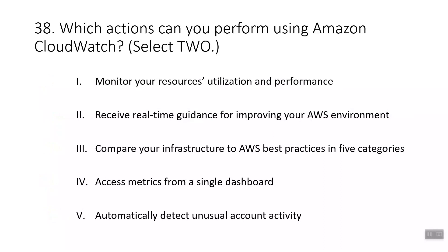Question thirty-eight: which actions can you perform using Amazon CloudWatch? The correct answers are monitoring your resources' utilization and performance, and accessing metrics from a single dashboard. Receiving real-time guidance for improving your AWS environment and comparing your infrastructure to AWS best practices in five categories are performed by AWS Trusted Advisor. Automatically detecting unusual account activity is performed with AWS CloudTrail.